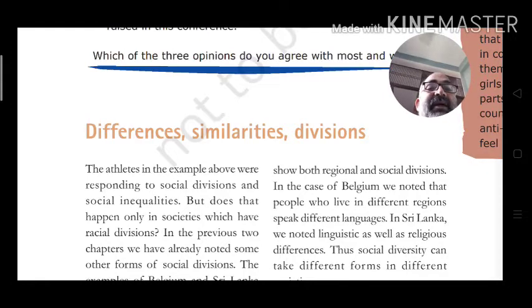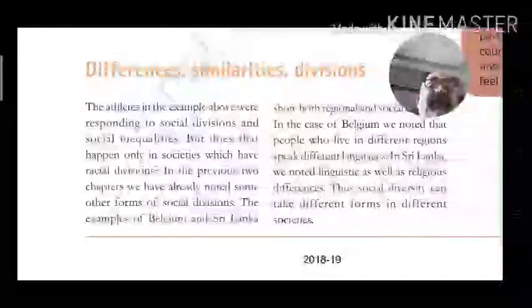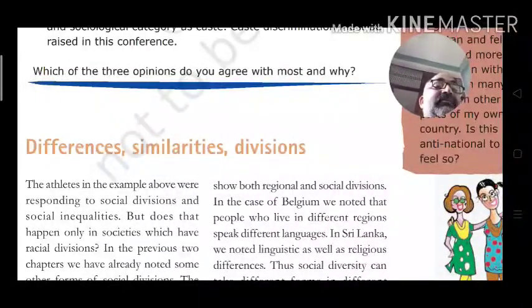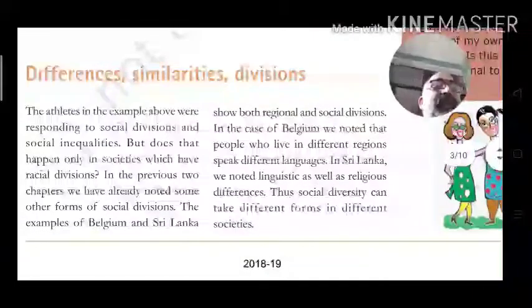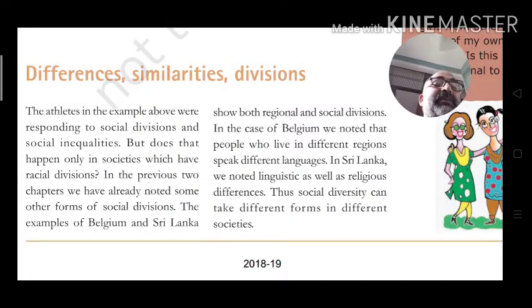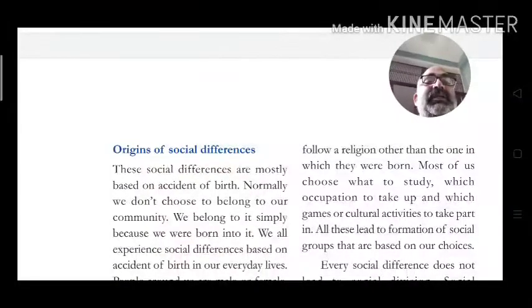In the previous two chapters, we already noted other forms of social division. The examples of Belgium and Sri Lanka showed regional and social division. In Belgium, people living in different regions speak different languages. In Sri Lanka, there were linguistic as well as religious differences. Social diversity can take different forms in different societies — in the US it was based on race and skin color.